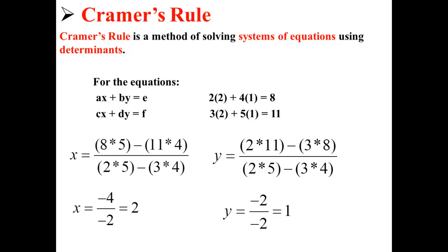So our solution x equals 2 and y equals 1, that ordered pair is a solution to our system of equations that we found using Cramer's rule.